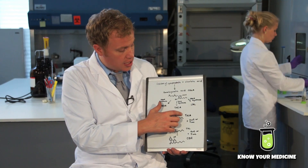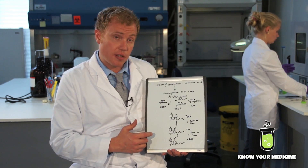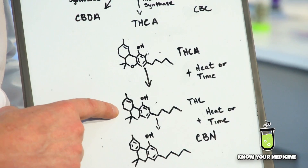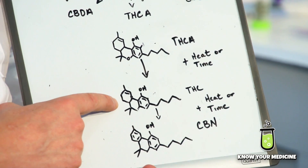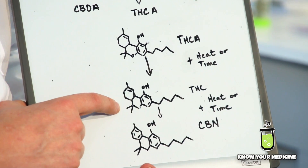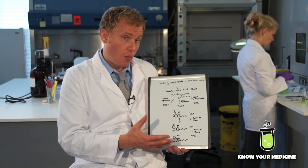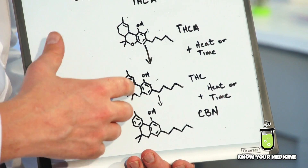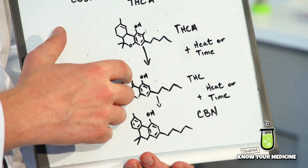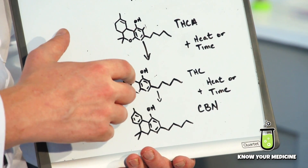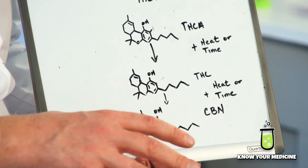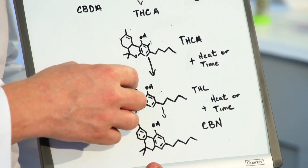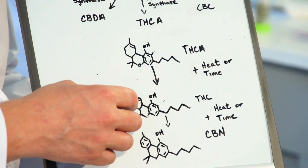CBGA folds upon itself into rings and makes THCA using THCA synthase, which is an enzyme. The THCA decarboxylates — we lose that carboxylic acid and form THC. THC over time or with heat will degrade into CBN, and all that's happening is we're losing hydrogen atoms and forming double bonds in this ring.